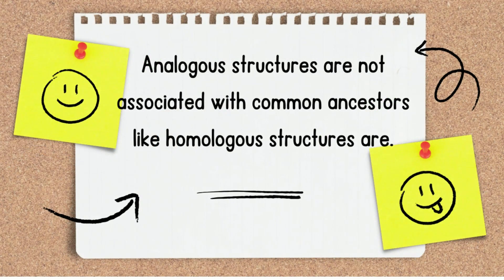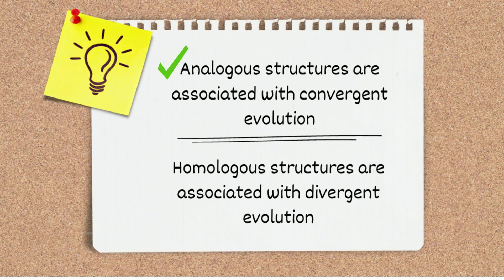Analogous structures are not associated with common ancestors the way homologous structures are. In addition, analogous structures are associated with convergent evolution, while homologous structures are associated with divergent evolution.